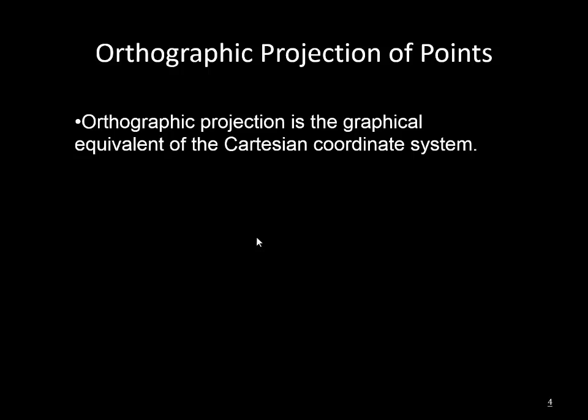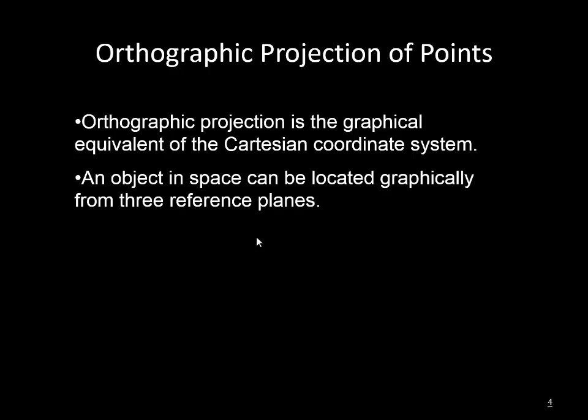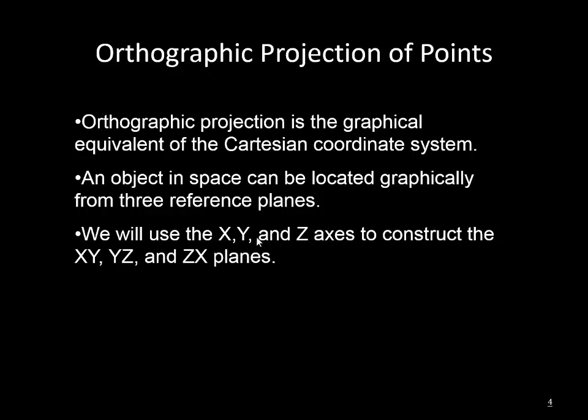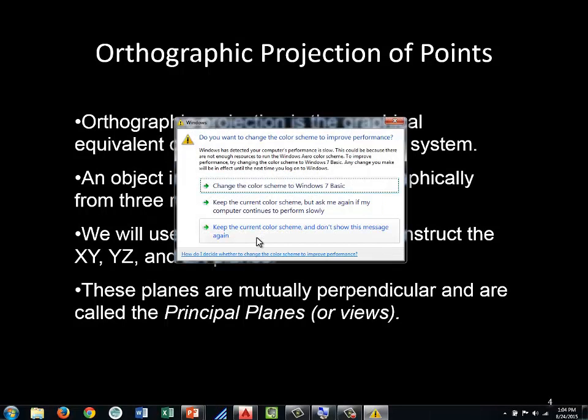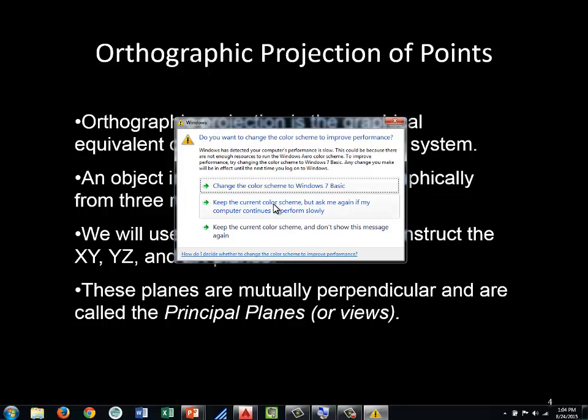We're using the Cartesian coordinate system and creating a graphical version of that. We can locate a point or anything else in space through three planes. Typically when we look at the AutoCAD screen, we're looking at XY — only two coordinates. We need that third dimension to fully locate a point, so one view is not enough. You need at least two views typically to fully describe an object. We'll be using the X, Y, and Z planes and axes.